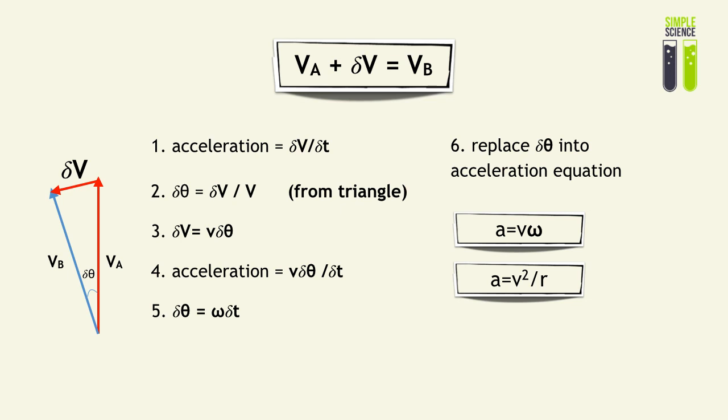We can also further derive another equation that is more commonly used in physics. That is, acceleration is equal to linear velocity squared divided by the radius. And that's in constant velocity circular motion.